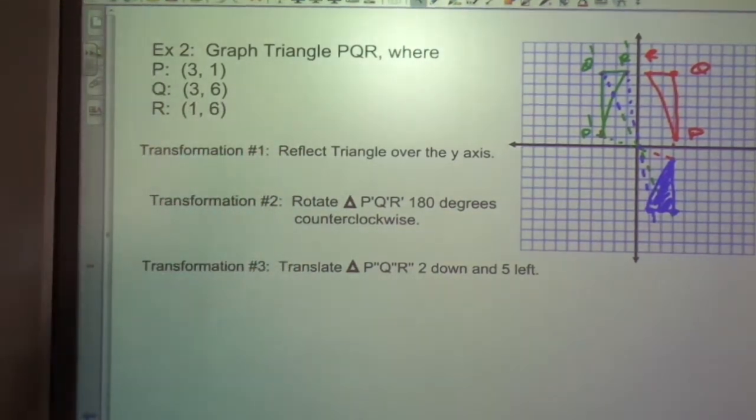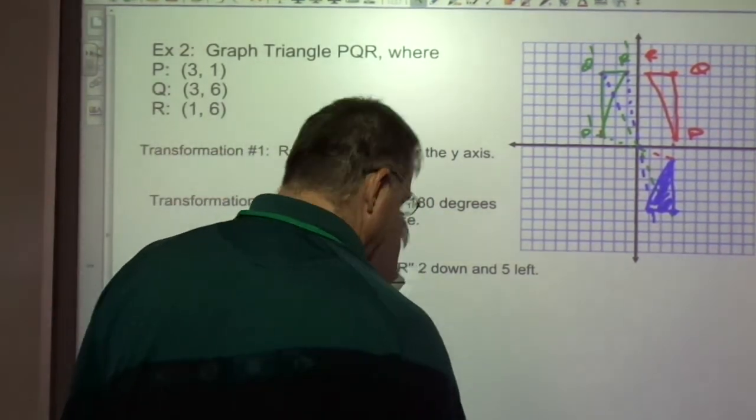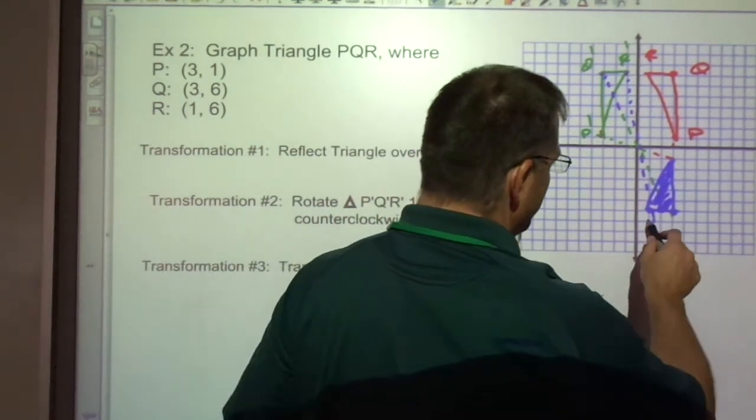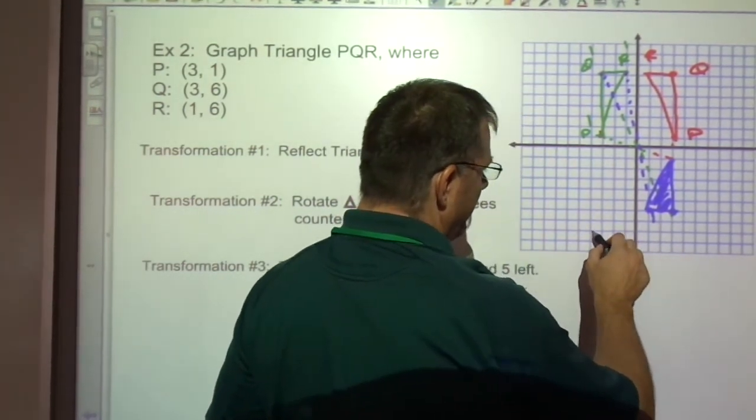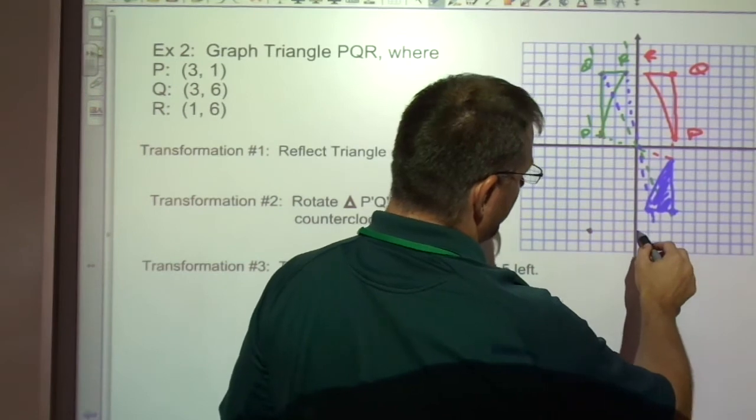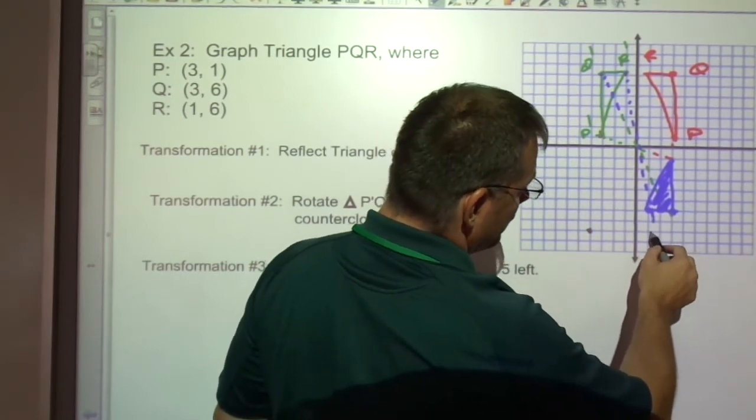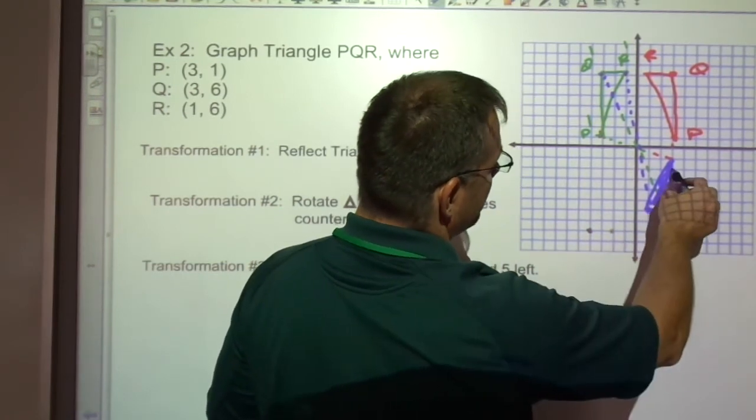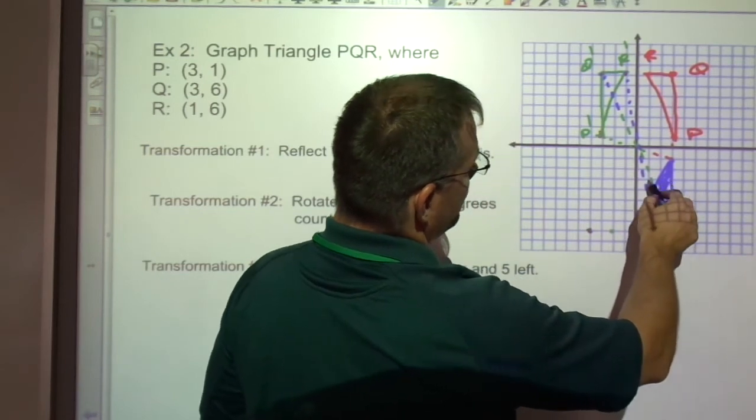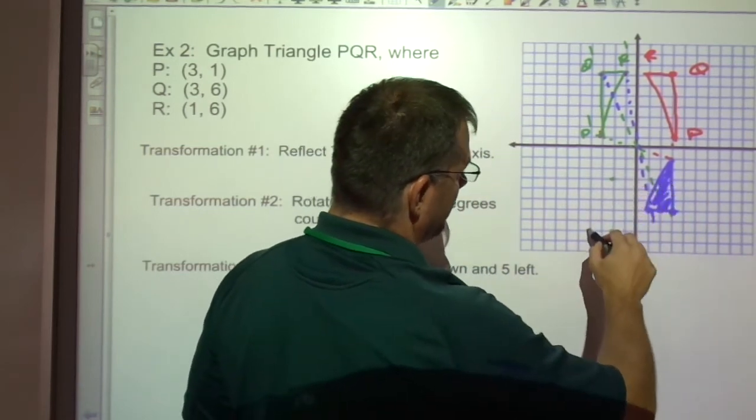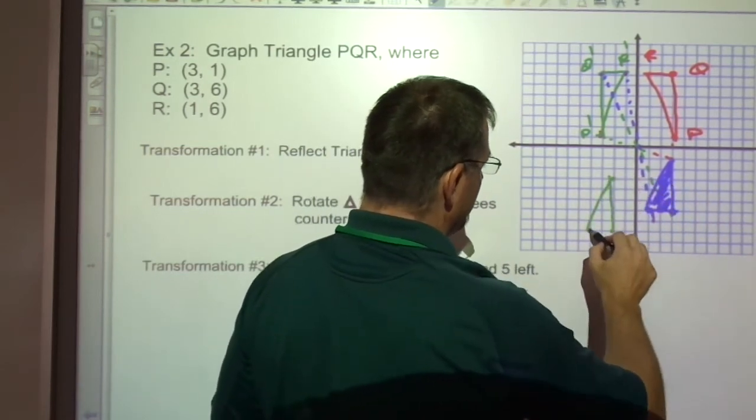And then the last one is we're going to translate it 2 down and 5 left. So 2 down and 5 left. Hopefully your third triangle looks something like this.